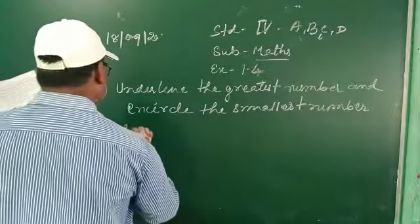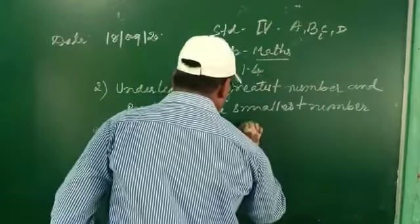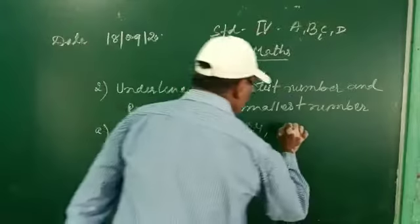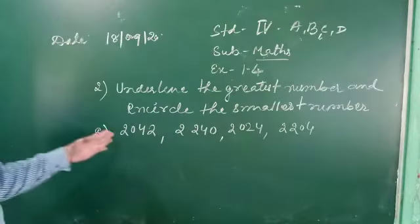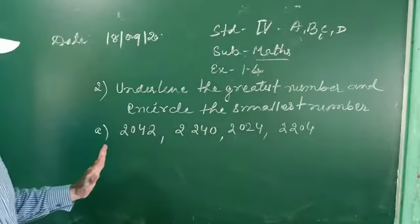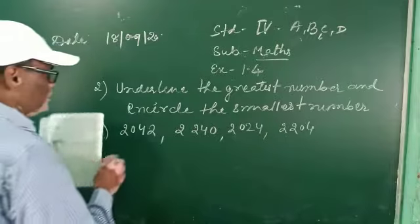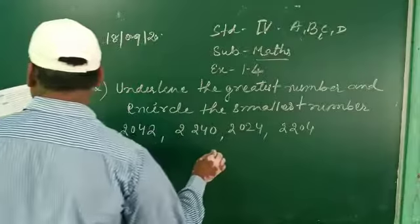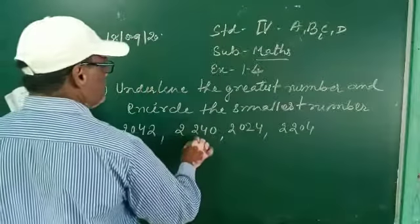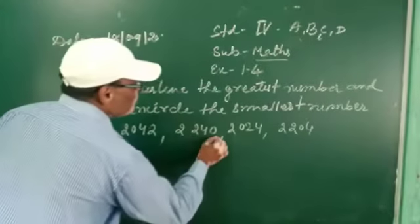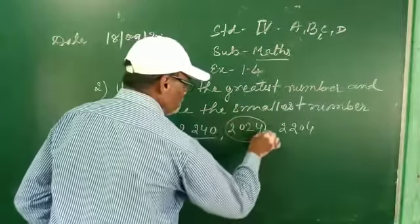Number A: the first number is 2042, the second number is 2240, the third number is 2024, and the fourth number is 2200. Four numbers are given in this portion. Check which is the greatest number. Among these numbers, the third number is the smallest and the second number is the greatest. You underline the second number like this, and circle the third number because it is the smallest.